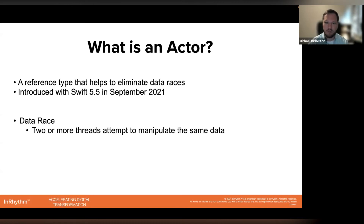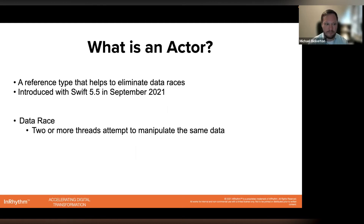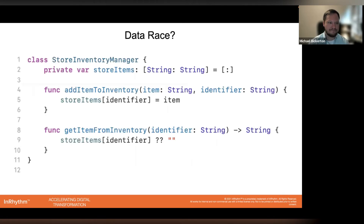You may also be wondering what a data race is. In generic terminology, it's when two or more threads attempt to manipulate or mutate the same data concurrently. At best, this can lead to inconsistent or unpredictable behavior, and at worst it can cause your app to crash. These issues can often be tricky to debug and track down in production, and in general they are things you would want to avoid.